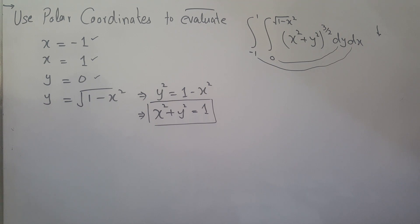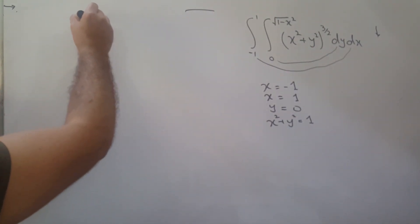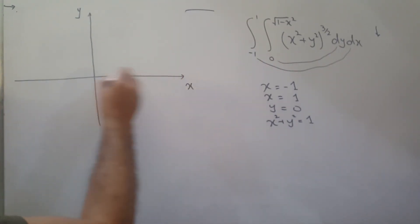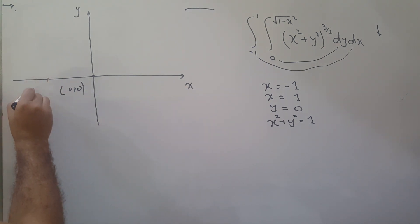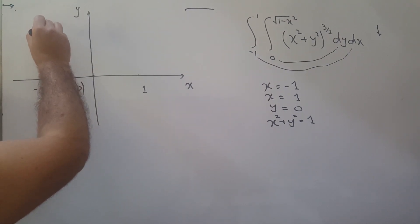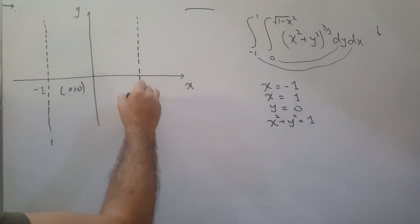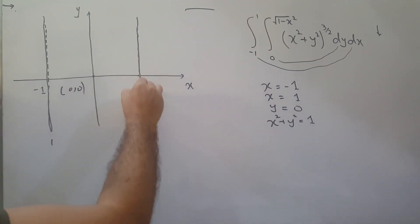We can sketch that region and then transform it easily into r and theta, the polar coordinates. To transform into polar we need to know the region of integration first. Draw the coordinate system with x and y axes and the origin at 0,0. If minus 1 and 1 are marked on the x-axis, then x equals minus 1 is a vertical line and x equals 1 is another vertical line, and the region lies between these two lines.